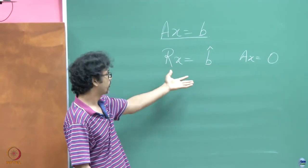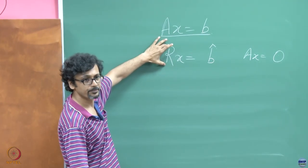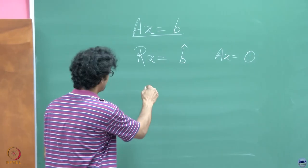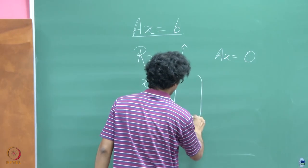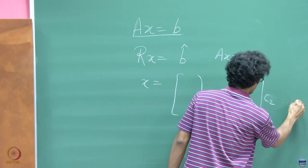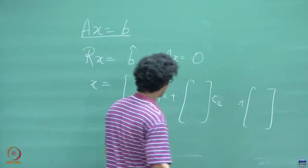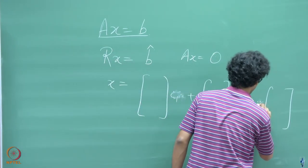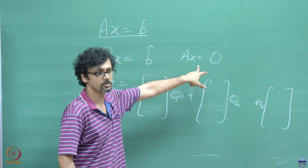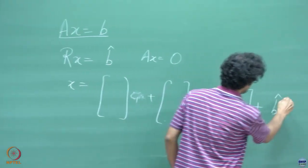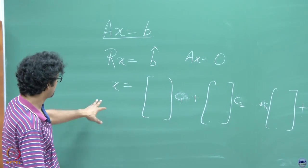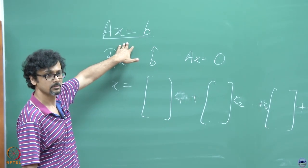But how does that help us in solving the overall thing? Once you have gotten it to the row reduced echelon form, what you need to add on to the solution — the complementary part — is essentially just b-hat. So if you write x as something like u1 plus c1, c2, there will be one part ck that satisfies Rx = 0 and therefore Ax = 0. To that if you also add b-hat, that will be your solution.